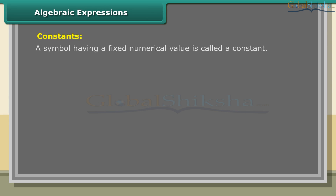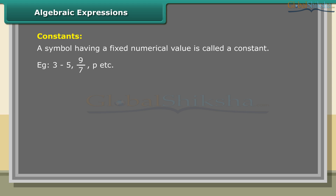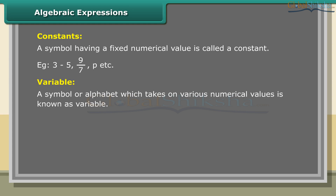Constants: A symbol having a fixed numerical value is called a constant. Examples: 3, −5, 9/7, π, etc. Variables: A symbol or alphabet which takes on various numerical values is known as a variable.